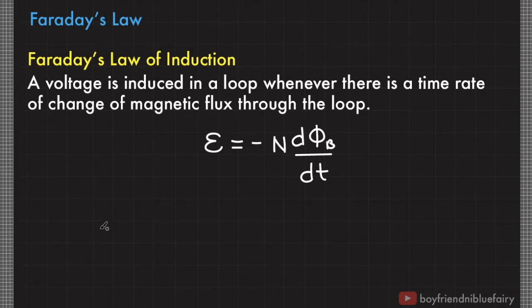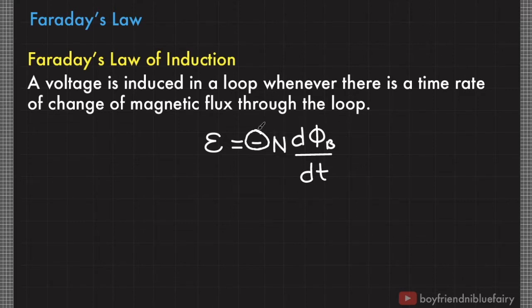Hence, if we have N number of loops, then we simply multiply this term by N. The negative sign in this relationship has a special meaning, and later I'll explain it.